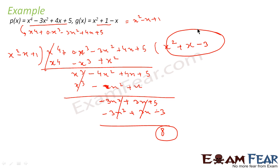We arranged in descending order of powers of x and then used the Euclid formula. The divisor was x², the dividend's leading term was x⁴, so we multiplied by x² to match. Then the next leading term was x³, so we multiplied by x. To get −3x², we multiplied by −3. Since 8 cannot be divided further by x² − x + 1, it is the remainder.